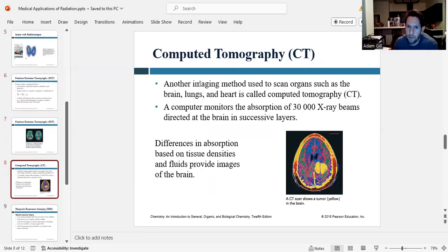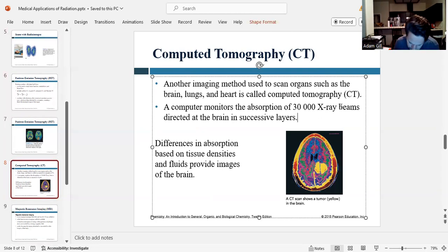The next type of scan we're going to talk about is computed tomography, also known as a CT scan. And so computed tomography is different in that you're not ingesting a radioisotope. So this imaging comes from x-rays.